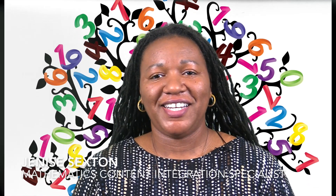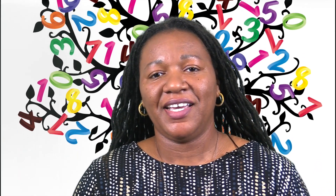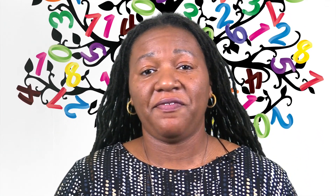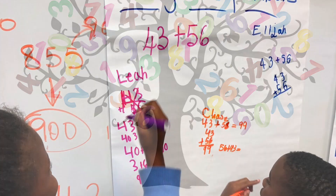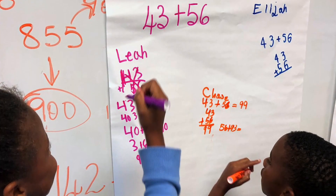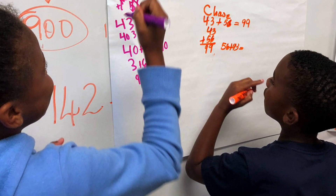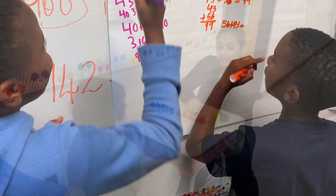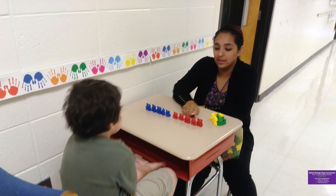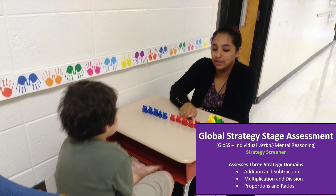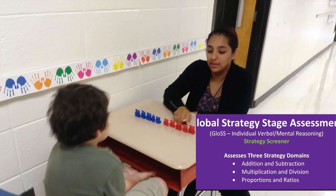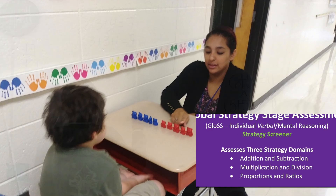The Georgia Numeracy Project is a free resource developed by the Georgia Department of Education. It's used to address students' foundational numeracy. The Georgia Numeracy Project consists of a two-part universal screener. Part one of that universal screener is the GLOSS assessment, which stands for the Global Strategy Stage assessment.